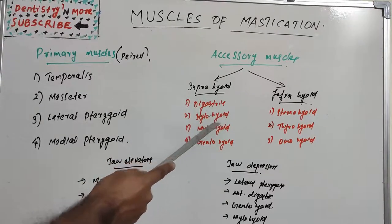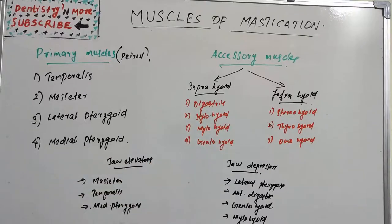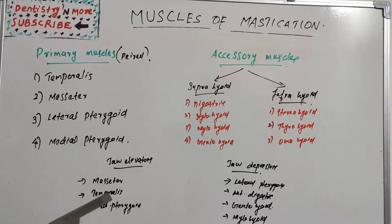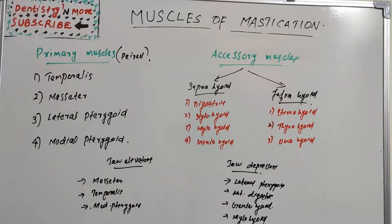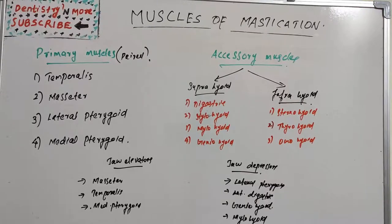The infrahyoid muscles are sternohyoid, thyrohyoid, and omohyoid. Another classification is jaw elevators and jaw depressors. Jaw elevators are masseter, temporalis, and medial pterygoid. Lateral pterygoid is involved in jaw depression, and jaw depressors also include anterior digastric, geniohyoid, and mylohyoid. Now let's study the primary and accessory muscles of mastication one by one.